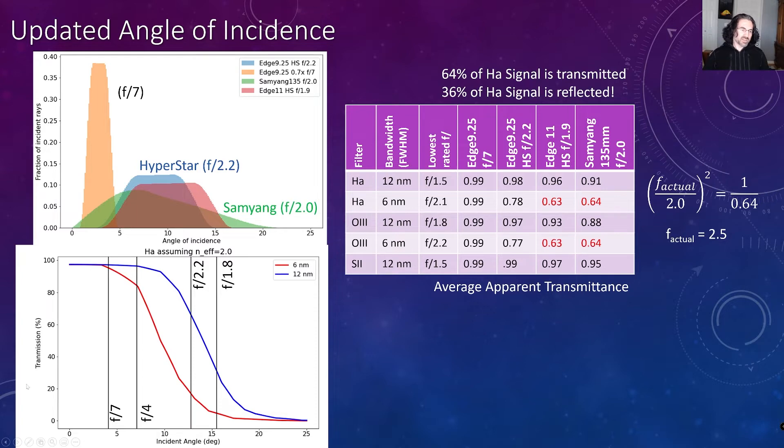Now if we look back at this transmission curve, we can see that that transmission drops off as a function of the incident angle. So if we were to use that 6 nanometer filter for the Samyang filter, as soon as we hit kind of this 5 degree angle, you're going to start losing light by quite a bit as you go out to steeper and steeper angle. So we can see that a lot of the contributions of that lens are going to be filtered out.